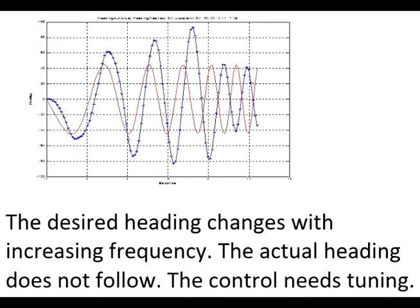In the next demonstration, the heading commands increase in frequency. The robot at first follows, then falls behind. The increased overshoot in the middle of the graph demonstrates a resonant frequency for this particular build. Toward the end of the plot, the robot is 180 degrees out of phase.